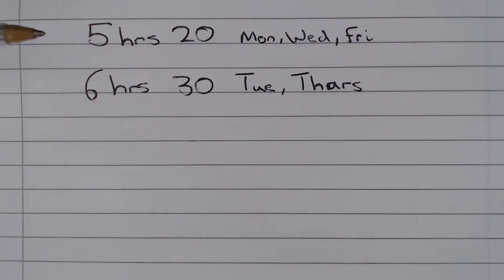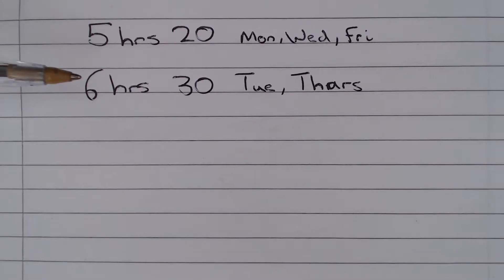So all we actually need to do is notice that it's 5 hours 20 minutes on 3 days and 6 hours 30 minutes on 2 days. So we need to do 5 hours 20 multiplied by 3. Well the quickest way to do this is to deal with it in hours and minutes.